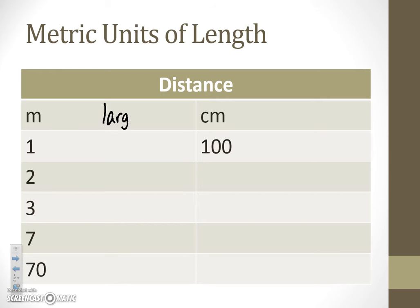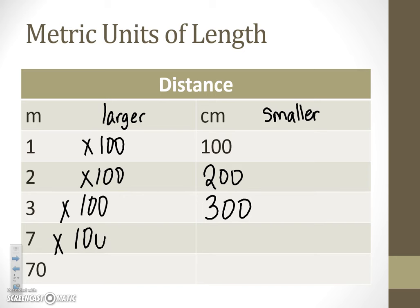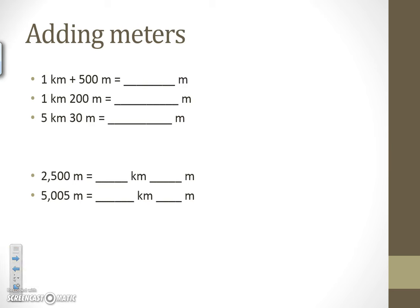Now let's talk about meters to centimeters. Meters is the larger unit — that's about the length of your arms stretched out — and centimeters is the smaller unit. So again, we're going from big to small. Looking at the chart, I go from 1 to 100, so I multiplied the larger unit by 100 to get the smaller unit. So 2 times 100 gives 200 — 2 meters is equivalent to 200 centimeters. 3 meters is 300 centimeters, 7 meters is 700 centimeters, and for 70 meters, using the circle and triangle: 7 times 1 is 7, then add three zeros, giving 7,000 centimeters.